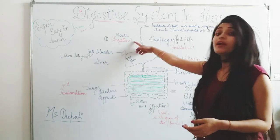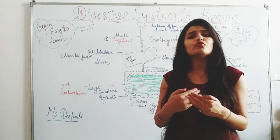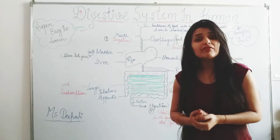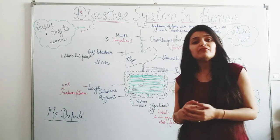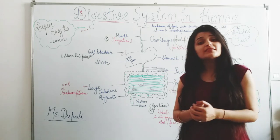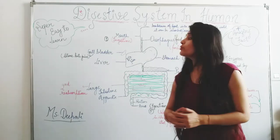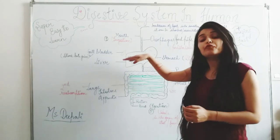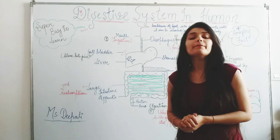Starting with the first process called ingestion. Ingestion is done basically with the help of the mouth. As you intake the food, the teeth in your mouth, the tongue, and the saliva produced by the salivary glands start mixing with the food. The saliva softens up the food after the teeth grind and crush it. After grinding, that food goes into the esophagus, which is also called the food pipe.